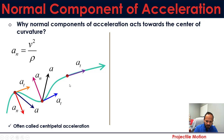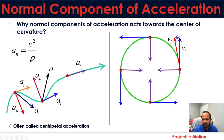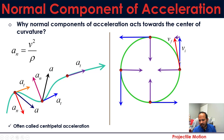Since the normal component always points toward the center, it is often called centripetal acceleration — meaning 'center-seeking.' For a more detailed explanation: consider a particle on a circular path, rotating along it. At each of four positions, the velocity is tangent to the path and the normal is perpendicular to that tangent. At any instant, there is an initial velocity vector, and after a small time delta, the velocity direction changes by a small angle delta.